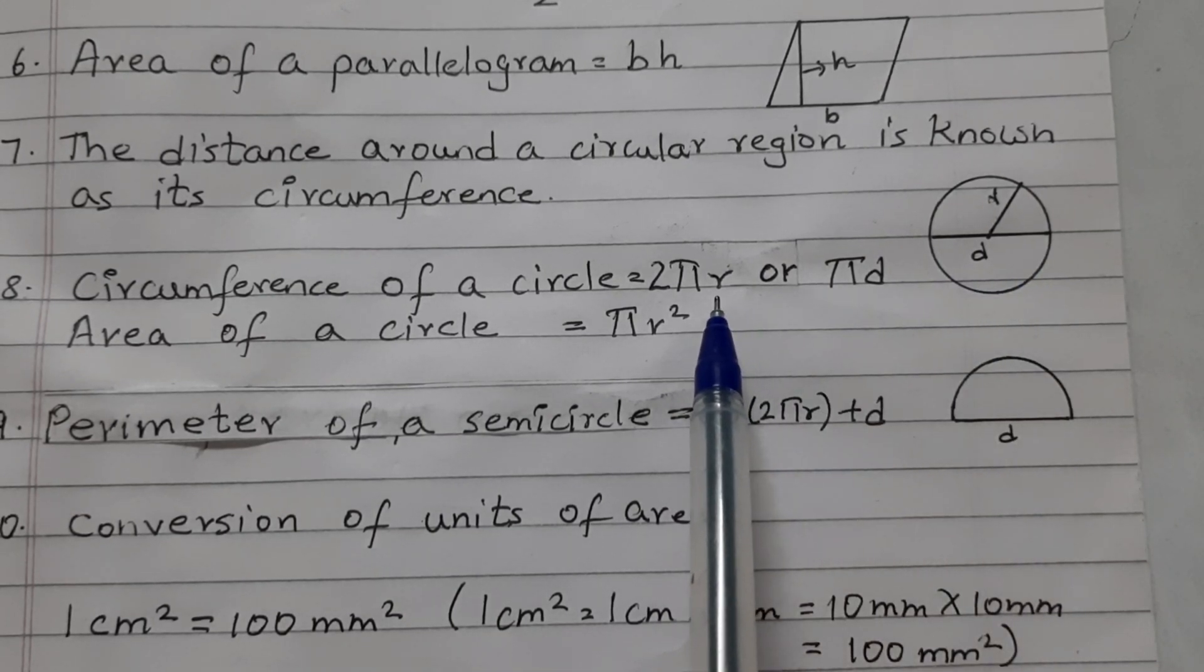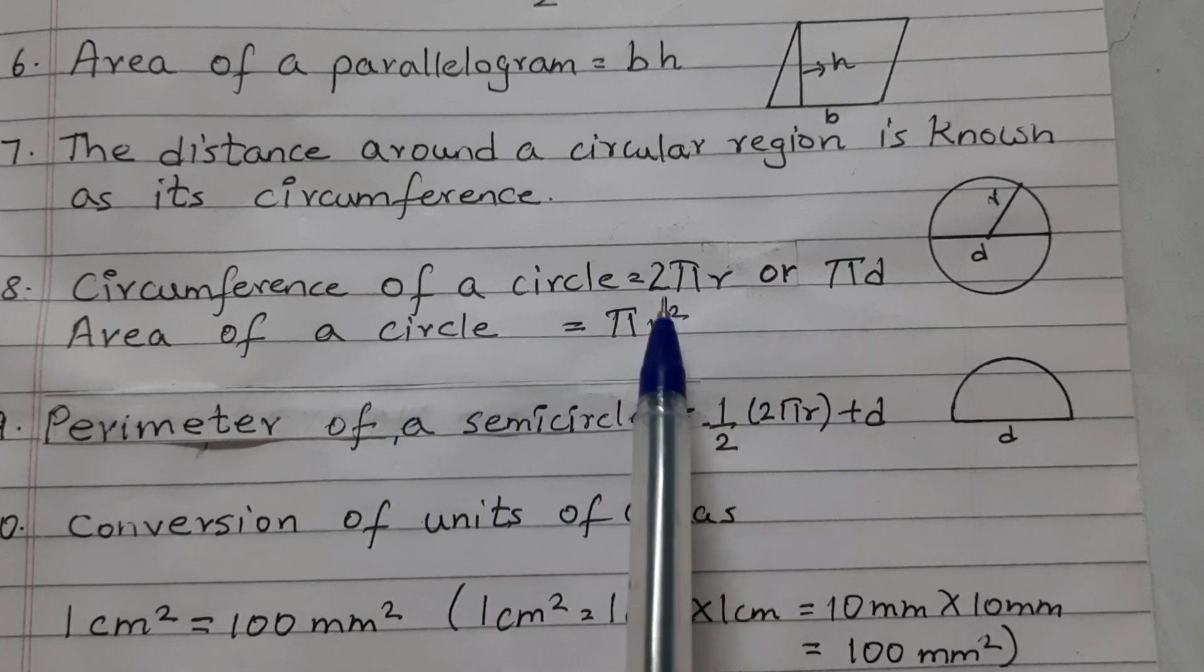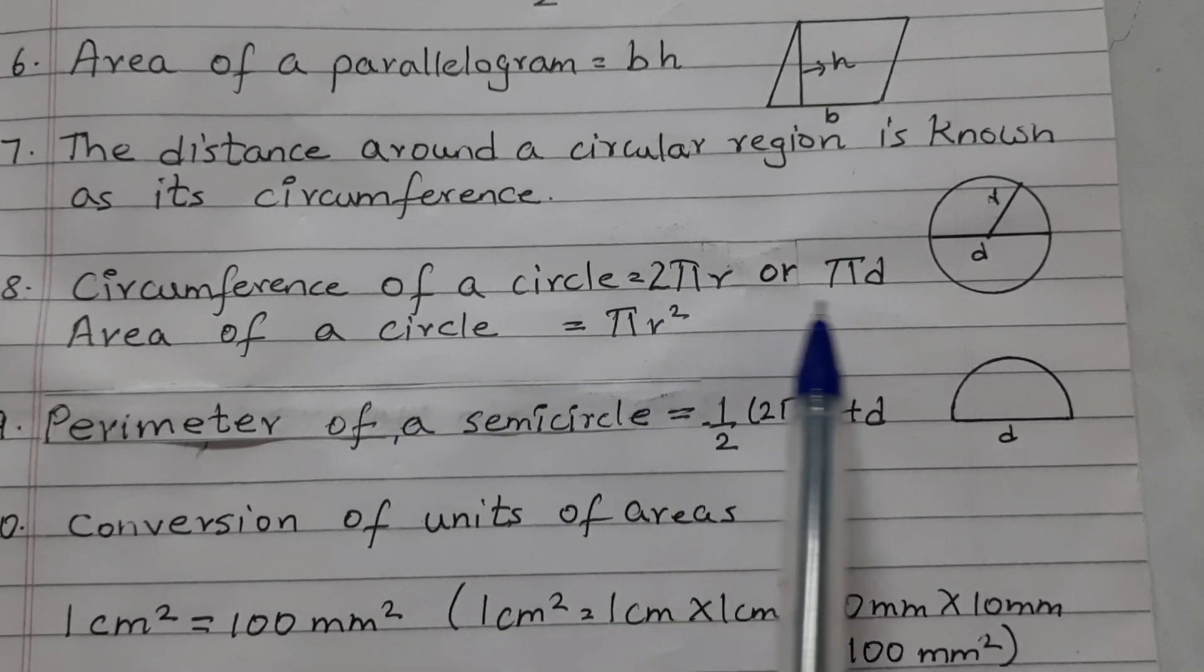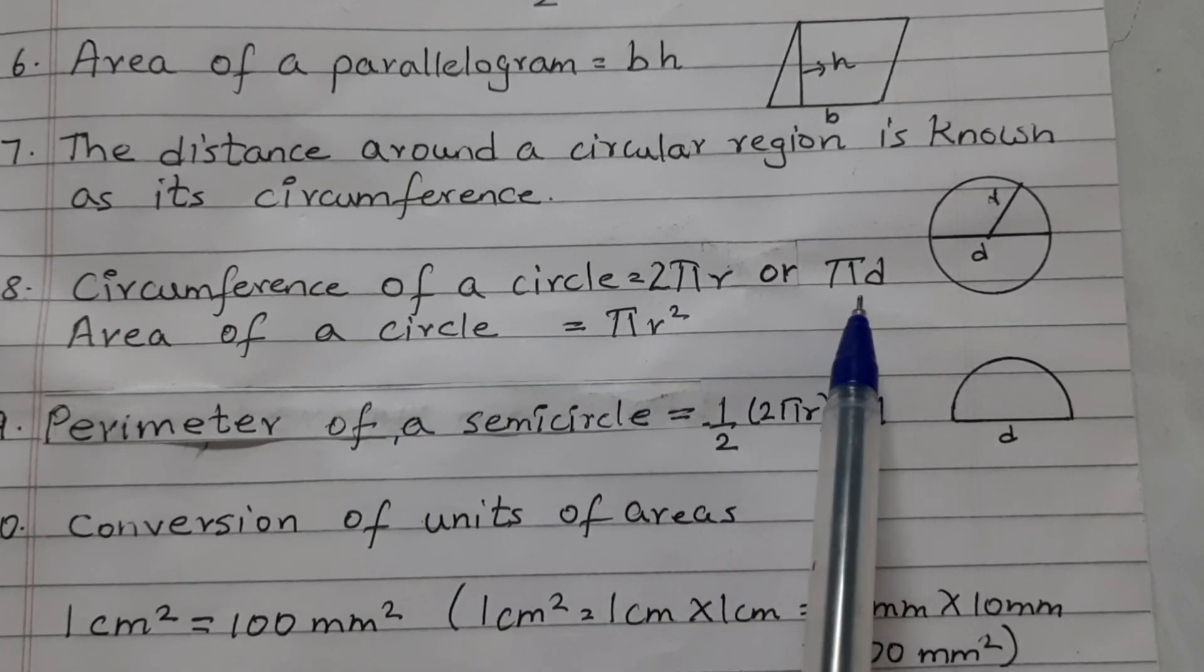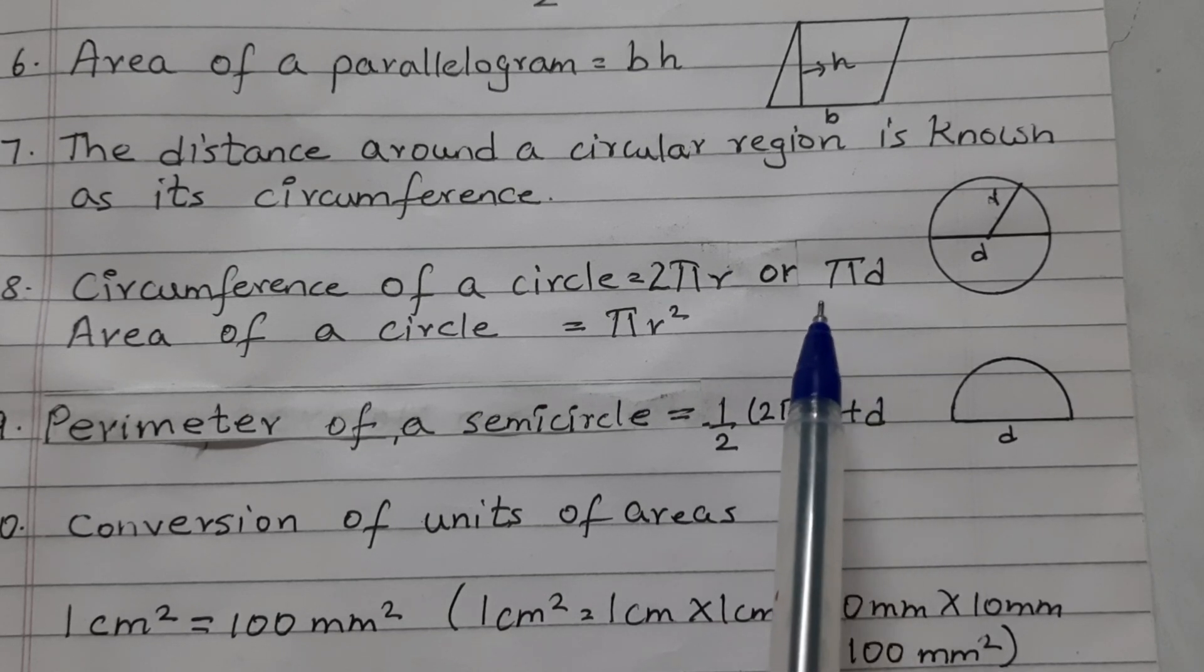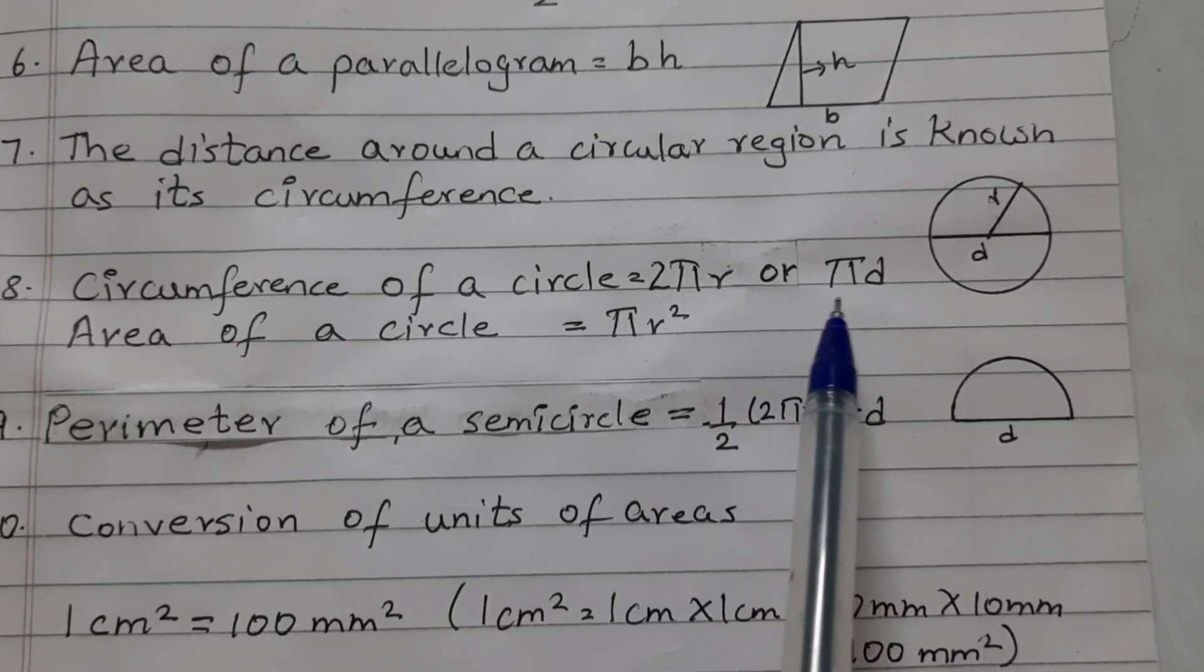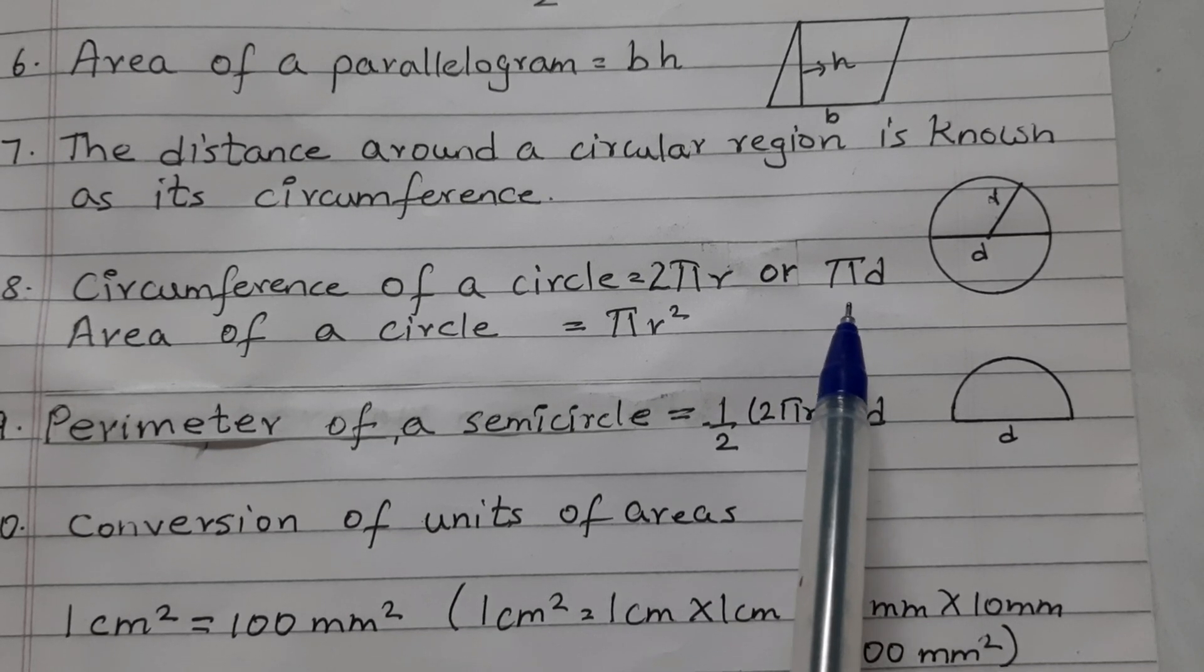If R is given, to find the circumference, use this formula 2 pi R. If D is given, then use this formula pi D. Now, the value of pi that we usually use is 22 by 7 or 3.14.